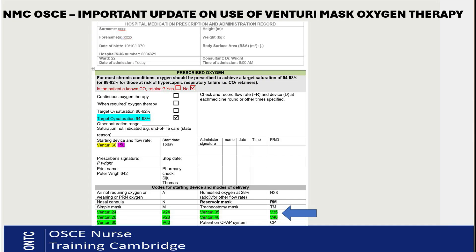Let's look at how an oxygen prescription with a venturi mask might appear in the exam. The target range on the oxygen chart is 94–98%, and the prescription shows venturi 60 with a flow of 15 liters per minute. So the concentration adapter you need to choose is 60%, and you need to set the oxygen flow meter at 15 liters. The prescription also includes start date, finish date, prescriber signature, and pharmacy check — confirming it's a valid prescription.